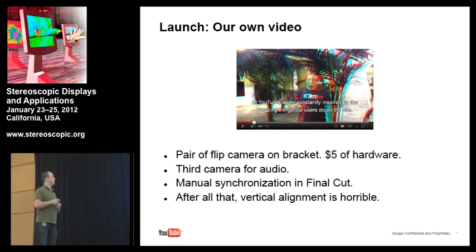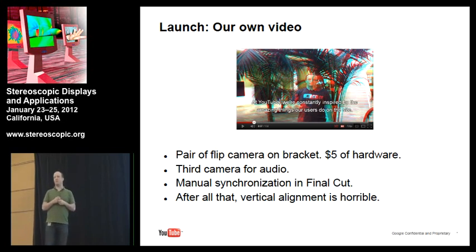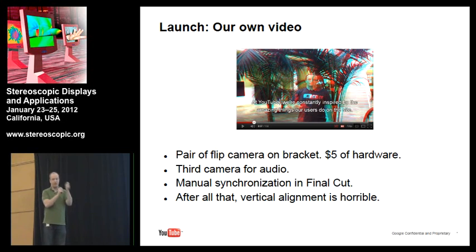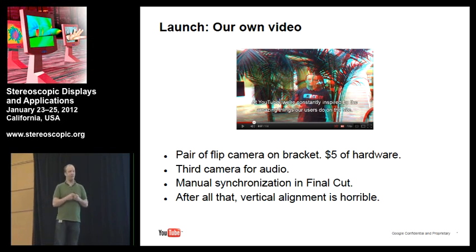This was an interesting transition, because whereas the anaglyph mixing was fun — just sitting down, coding, building something and hacking it out — the actual making of 3D content, we discovered, is really hard. We got a pair of Flip cameras and $5 worth of hardware and mounted them together. We discovered the audio didn't work, so we had like three sources and I was manually adjusting them in Final Cut. And as somebody politely said to me a few days ago, the vertical alignment could do with a little bit of work. Definitely a learning experience.